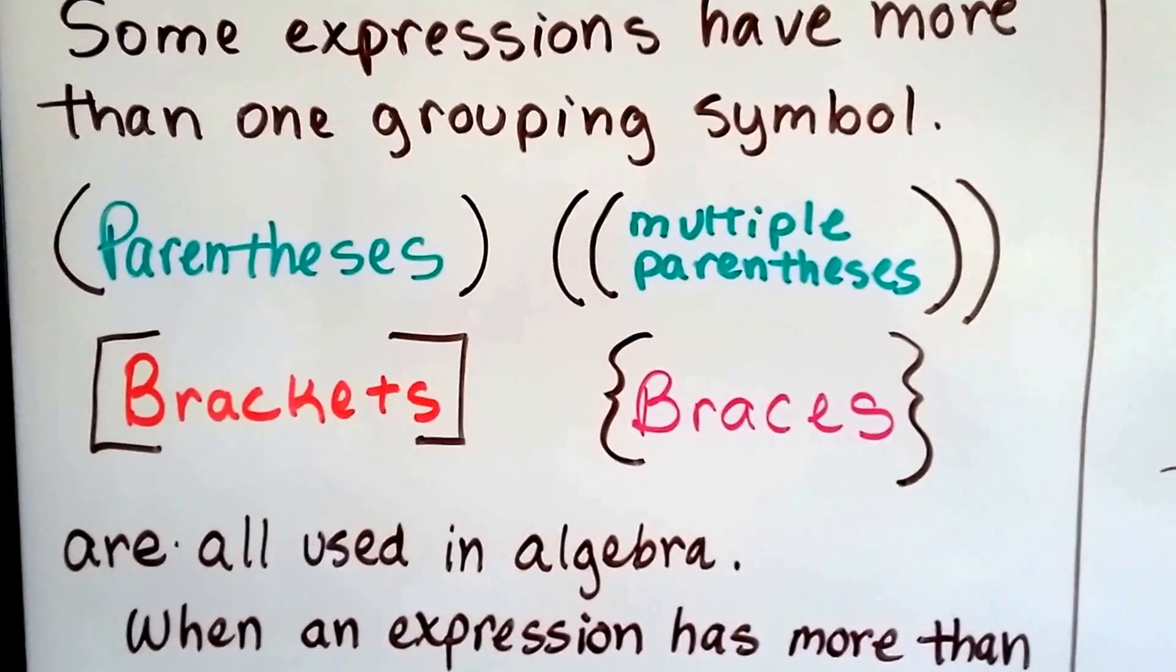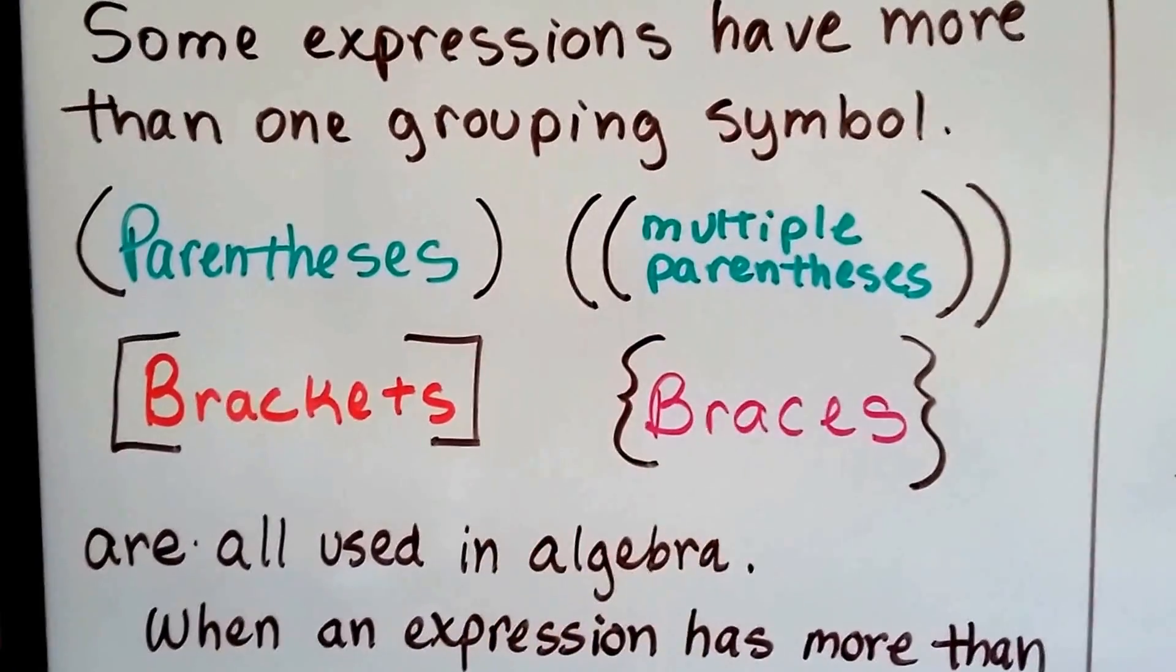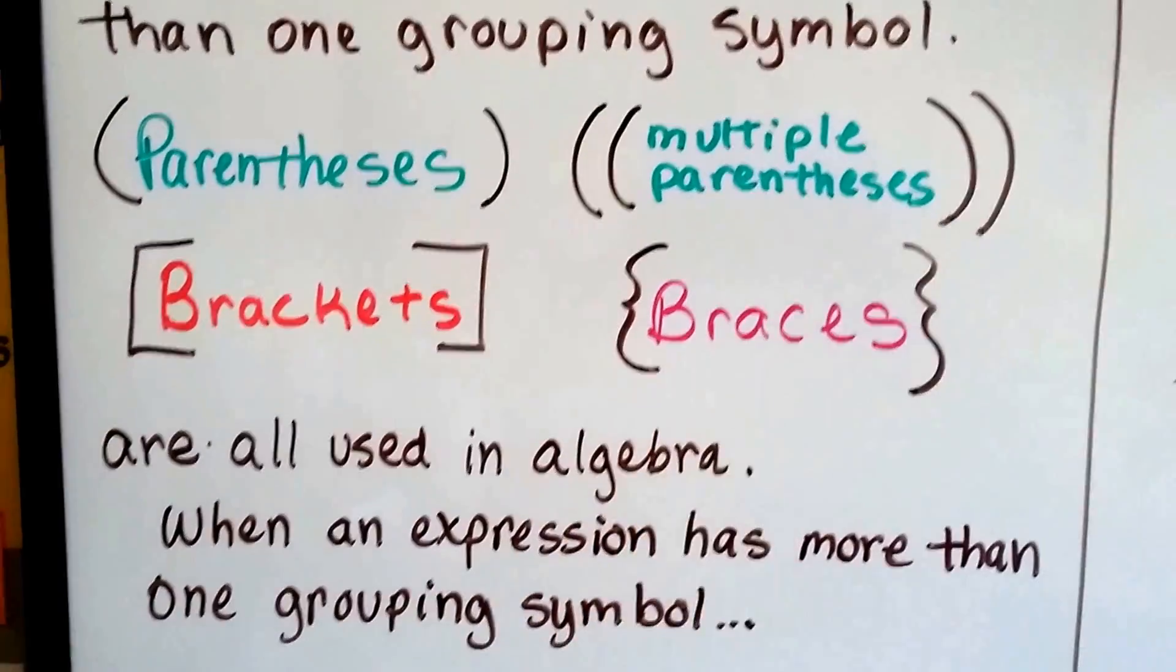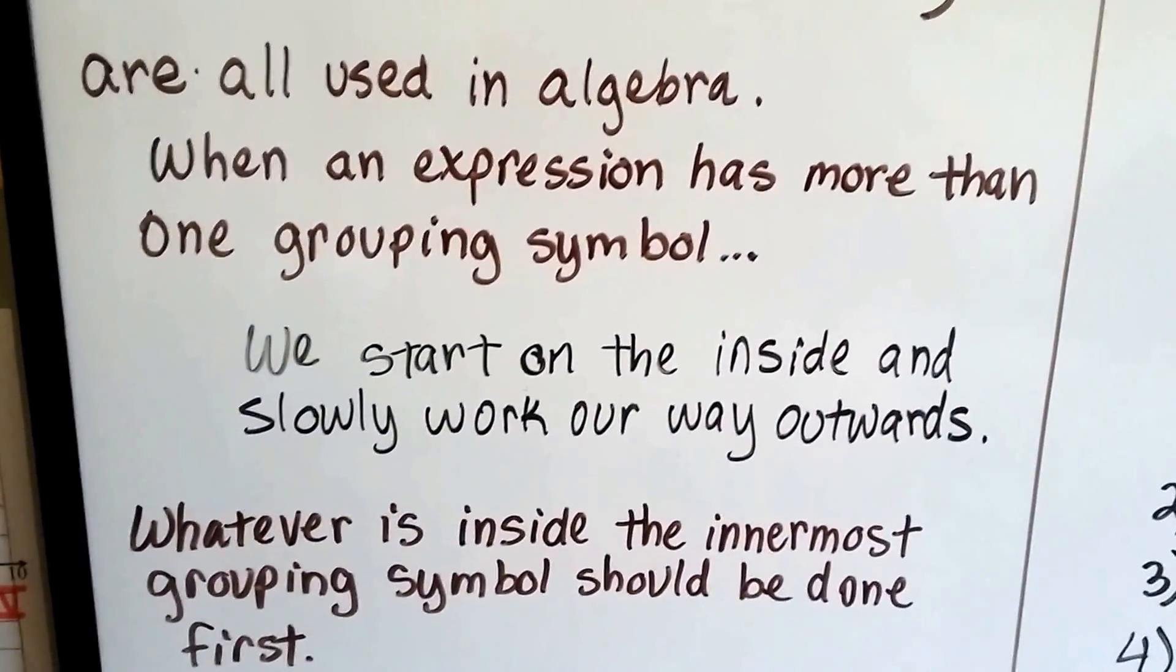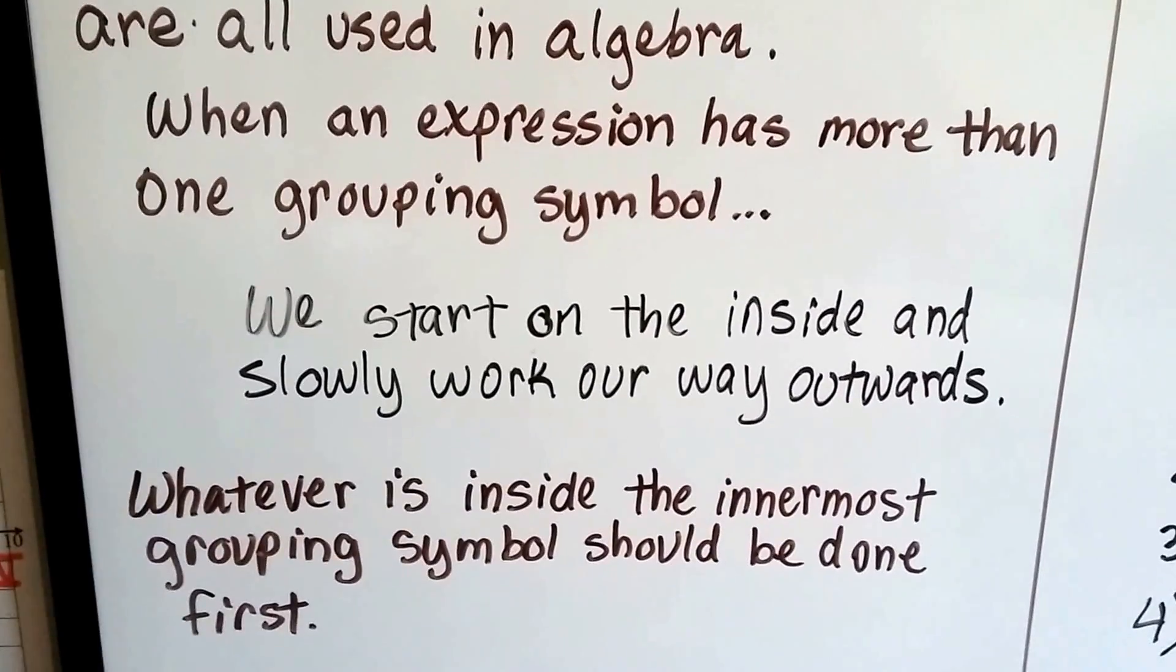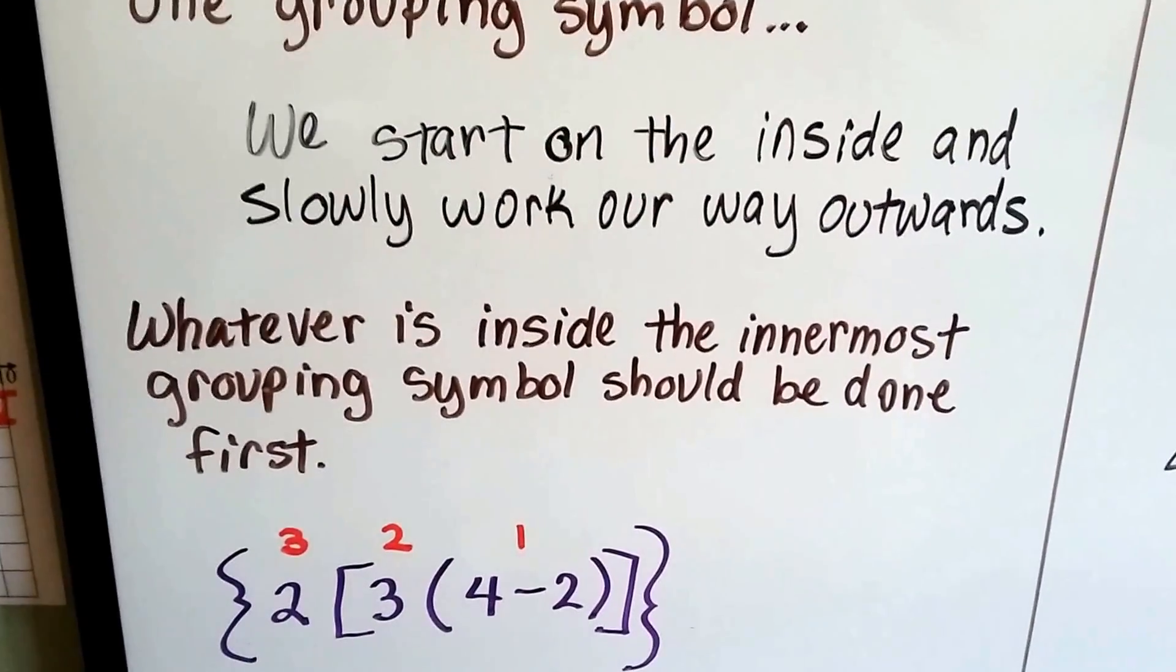Some expressions have more than one grouping symbol. They might have parentheses, multiple parentheses, brackets and braces. They're all used in algebra. When an expression has more than one grouping symbol, we start on the inside and slowly work our way outwards. Whatever is inside the innermost grouping symbol should be done first.